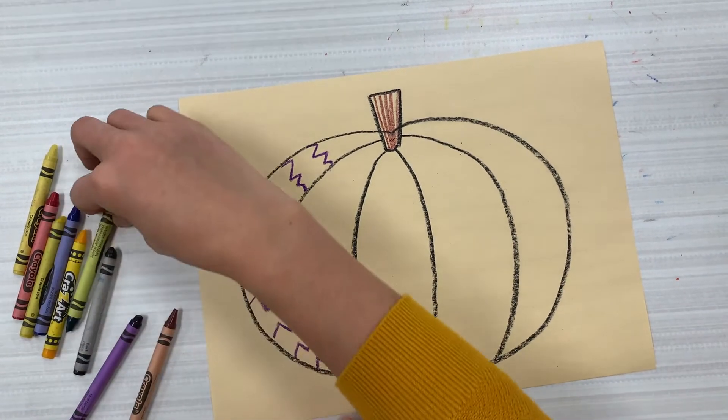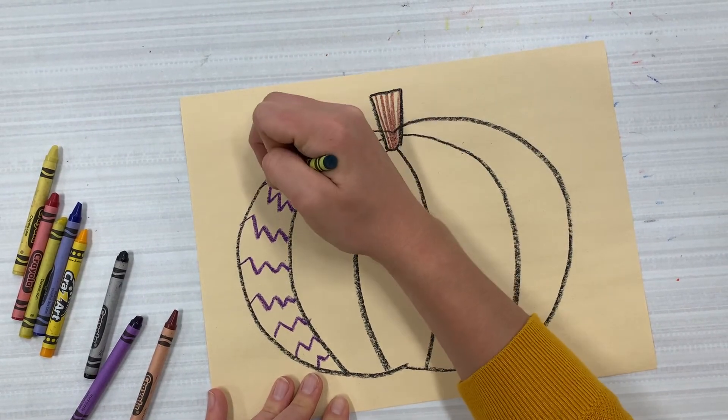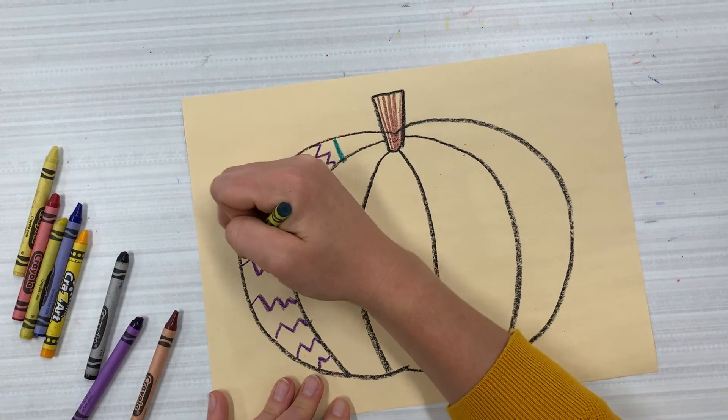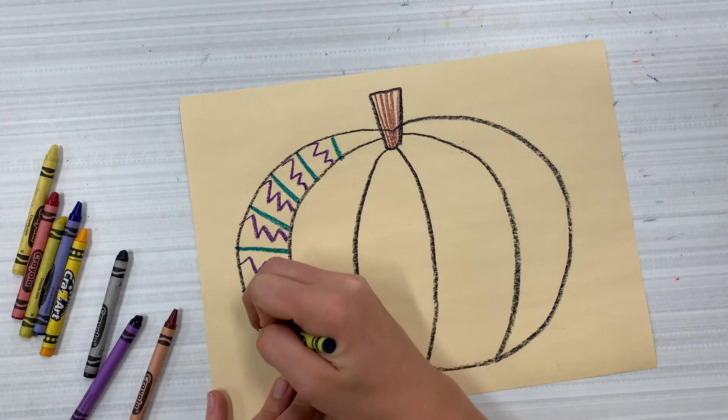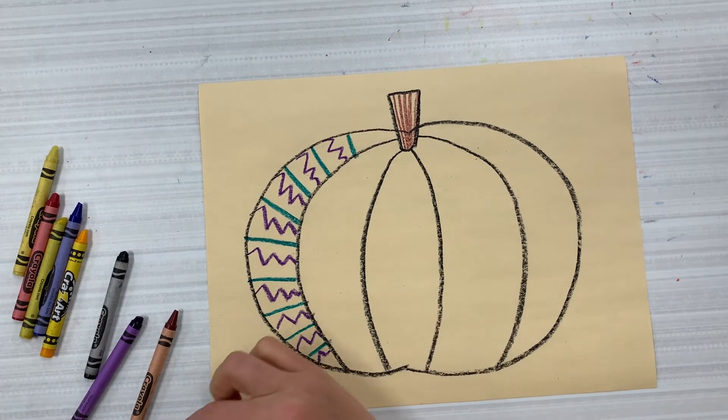So I am drawing zigzag lines across one of my sections. I'm starting with one color and line, and then I'm going back in and filling them with other lines. So this is a good way to do a pattern, but you can also do it your own way.